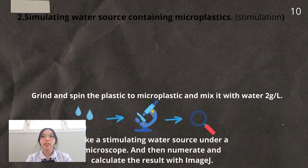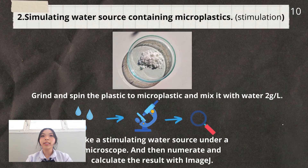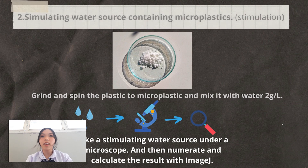The next process is simulating a water source containing microplastics. We mixed microplastics in an amount of 2 grams per liter. The simulated water source was examined under a microscope, and the microplastics were counted and calculated using ImageJ.